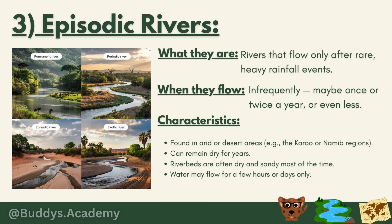Episodic rivers flow infrequently — maybe once or twice a year, or even once every few years. They are found in arid or desert areas, with examples being the Karoo or the Namib regions. Their riverbeds are often dry and sandy most of the time, and water may flow for only a few hours or days. In the diagram, the lower left image represents an episodic river — notice how dry the riverbed is and the lack of vegetation compared to a permanent river.